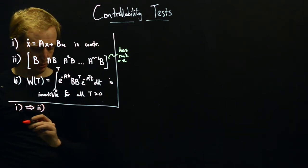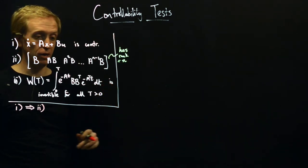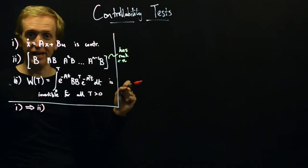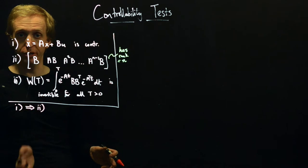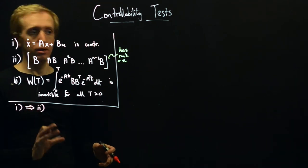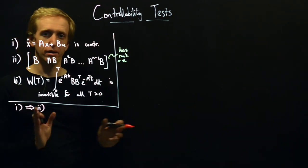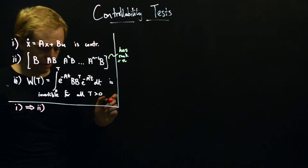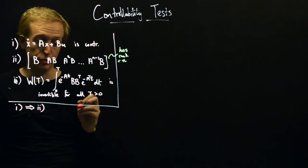Starting with one implies two: the definition of controllability says that given any initial condition, any final condition, and any time period T, we can always find an input taking us from the initial to the final condition. We also have controllability to the origin — given any initial condition, we can find an input taking us to the origin — which is equivalent to the original definition.